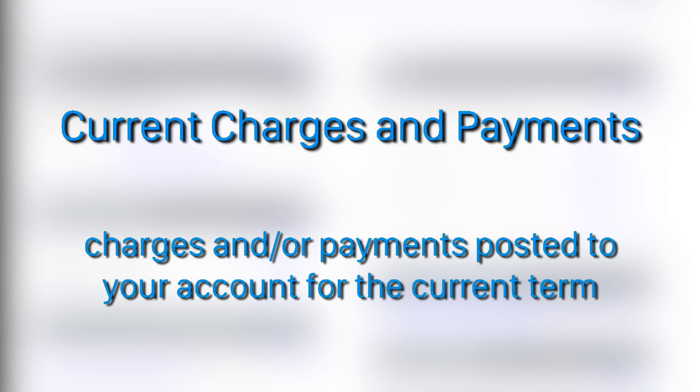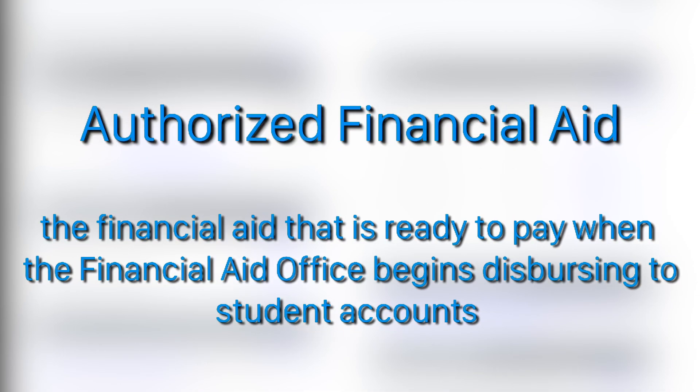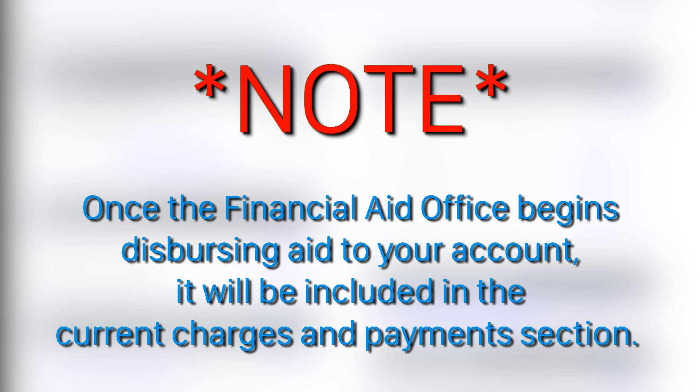The Current Charges and Payments refers to the charges and/or payments posted to your account for the current term. Authorized Financial Aid refers to the financial aid that is ready to pay when the Financial Aid Office begins dispersing to student accounts. It's important to know that once the Financial Aid Office begins dispersing aid to your account, it will be included in the Current Charges and Payments section.